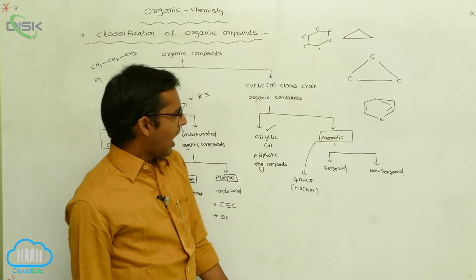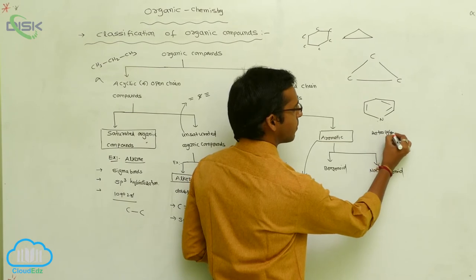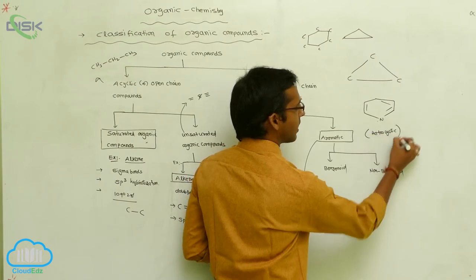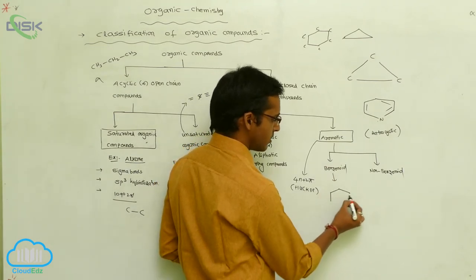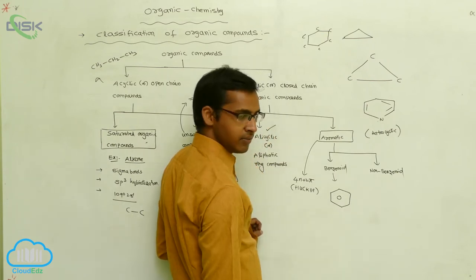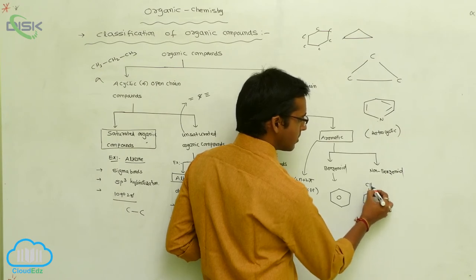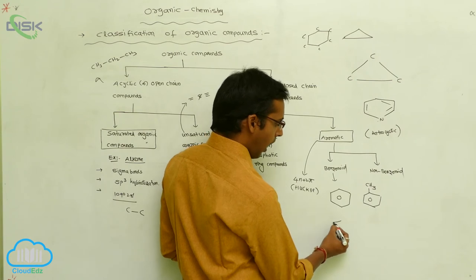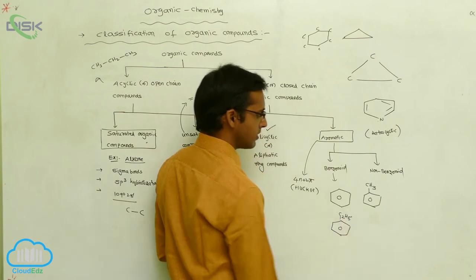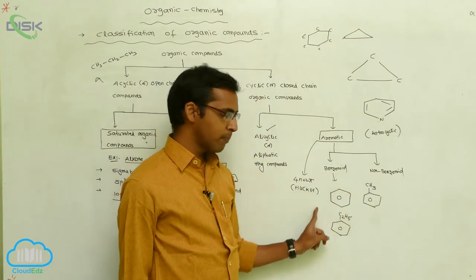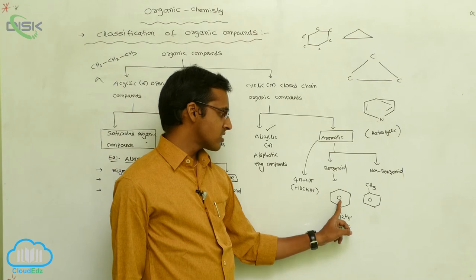Aromatic compounds are classified into two types: benzenoid compounds and non-benzenoid compounds. Non-benzenoid compounds include heterocyclic compounds. Benzenoid compounds contain a benzene ring — for example, benzene itself; if a methyl group is attached it is methylbenzene, and if an ethyl group (C2H5) is attached it is ethylbenzene. All contain double bonds within the ring.